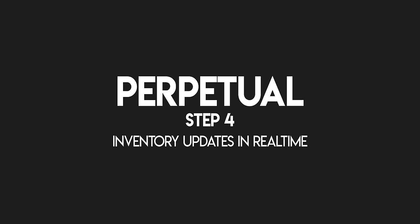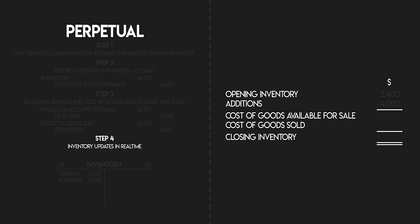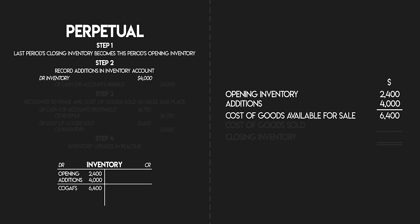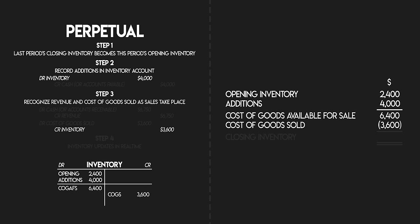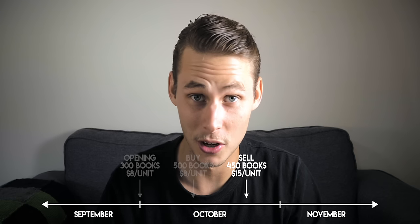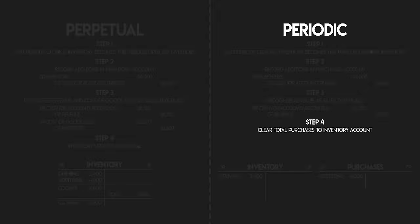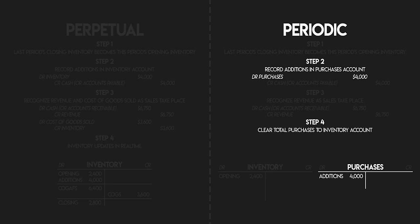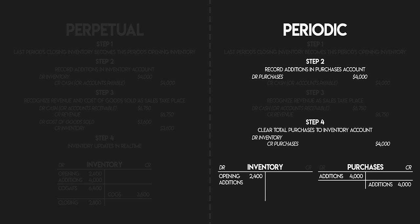Step four. With the perpetual method, inventory is updated in real time. At any given point you know all of the variables in this calculation, so your closing inventory balance is continuously updated. Your cost of goods available for sale was $6,400 and you sold 450 books costing $3,600 — that's your cost of goods sold — leaving a closing inventory balance of $2,800 in October. To find your closing inventory and cost of goods sold under the periodic system, we need to fast forward to the end of October. In step four of the periodic system, you clear total purchases to your inventory account — you post a journal to move all October inventory additions out of your purchases account and transfer them to your inventory account: credit purchases by $4,000 and debit inventory by $4,000.